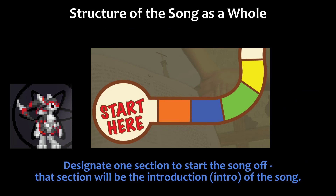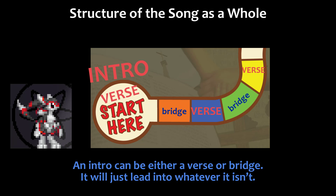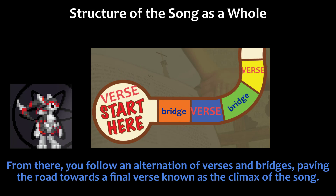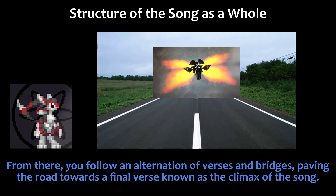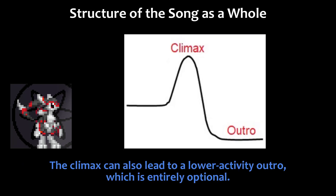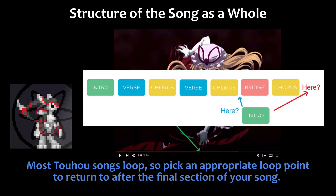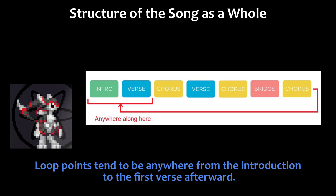Designate one section to start the song off — that section will be the introduction of the song. An intro can be either a verse or a bridge; it'll just lead to whatever it isn't. From there, you follow an alternation of verses and bridges, paving the road towards the final verse, known as the climax of the song. The climax can also lead to a lower-activity outro, which is entirely optional. Most Touhou songs loop, so pick an appropriate loop point to return to after the final section of your song. Loop points tend to be anywhere from the introduction to the first verse afterward.